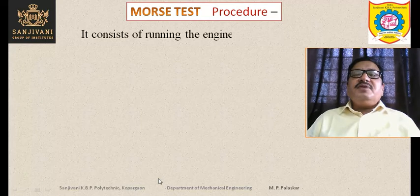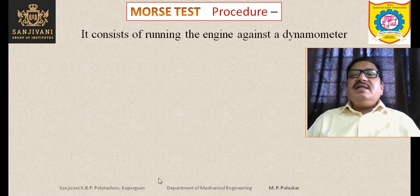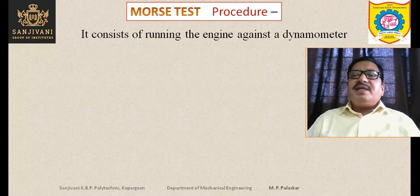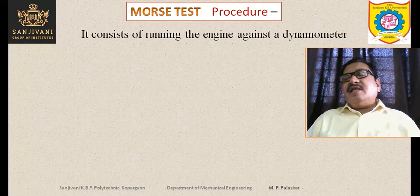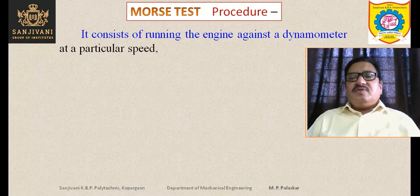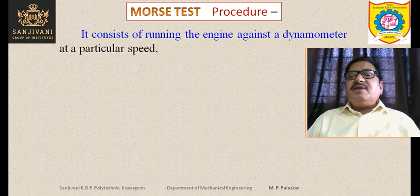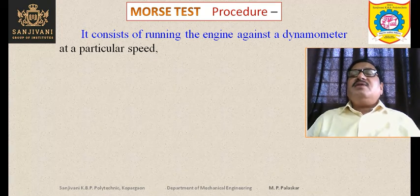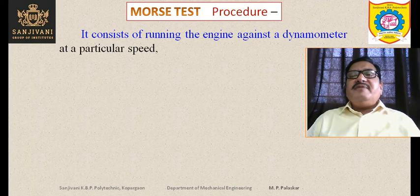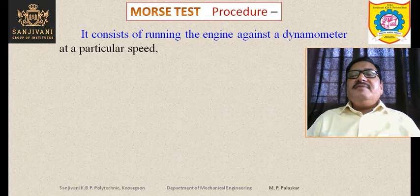The Morse test procedure involves running the engine against a dynamometer — either a hydraulic dynamometer or a rope brake dynamometer — which absorbs the engine's power. The speed is maintained constant because when speed is constant, frictional power is assumed to be constant. This is one of the key assumptions of the test.